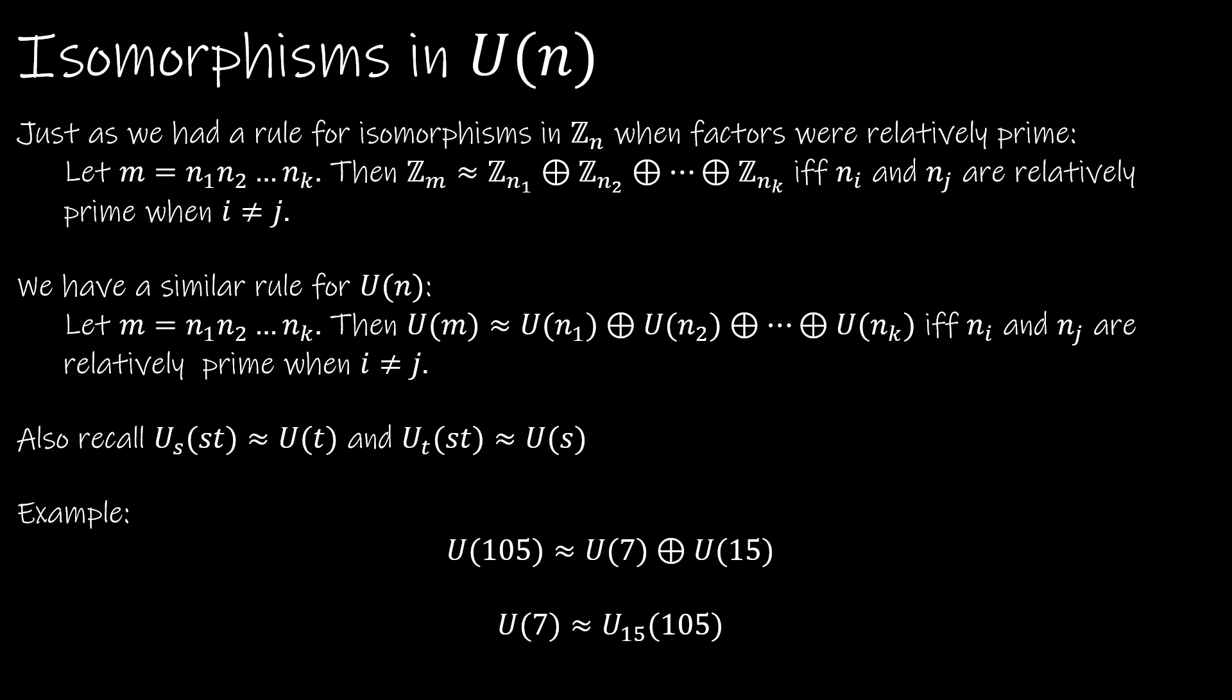So we have a similar rule for U sub n. And we're saying that if you have factors that are relatively prime, say U(105), I can factor that into 3 times 5 times 7. So I can say that U(105) is isomorphic to the external direct product of U(7) and U(15). Or I could say that it's isomorphic to U(3), external direct product U(5), external direct product U(7), and so forth.